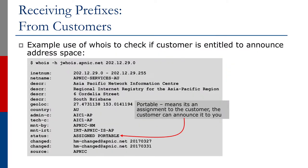An example of how to use the WHOIS command to check if a customer is entitled to announce address space is shown on the screen. As you can see in the output, the assigned IP address is displayed as INETNUM, with the name of the organization that was assigned the prefix shown as net name. The status of the registration is shown as Assigned Portable, which means it is an assignment to a customer and the customer can announce it to you.